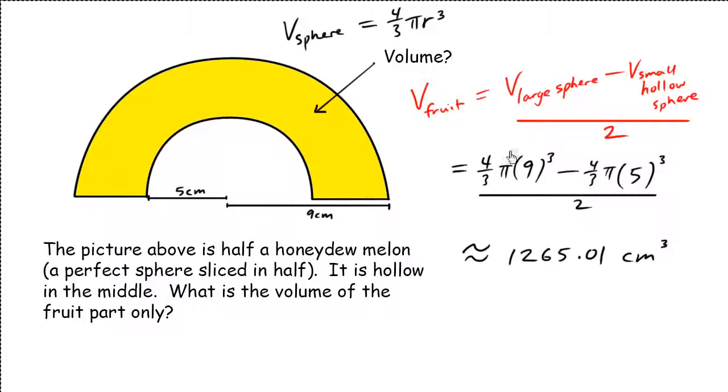So remember to use BEDMAS - the exponents go first. And of course, you have to be comfortable with your calculator. You have to know that you need to evaluate the numerator first, so there's a hidden bracket here, all divided by two. Know when to press enter in your calculator and get comfortable computing such large values so that you can match the answer.